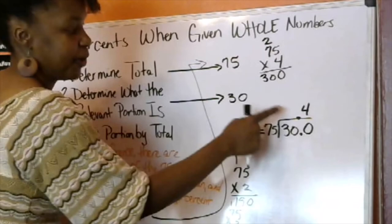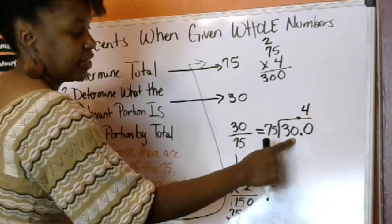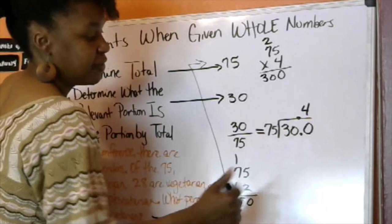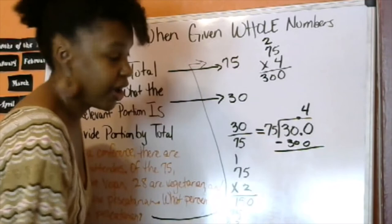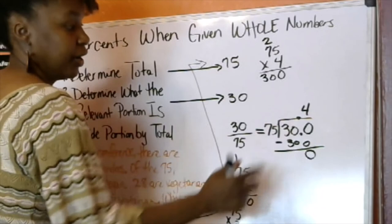So, this will work. 75 goes into 300 four times. Multiply 4 by 75. You subtract, you get nothing left. And so, you have this 0.4 here.